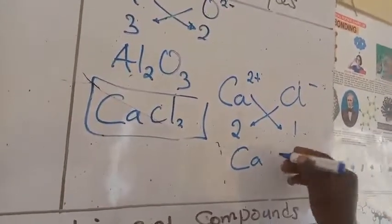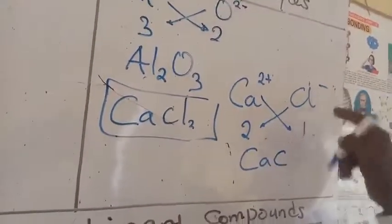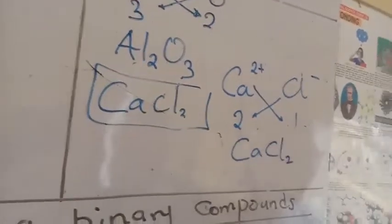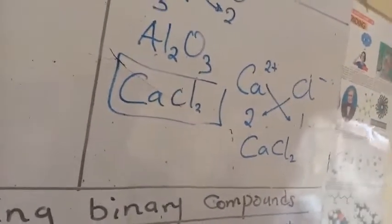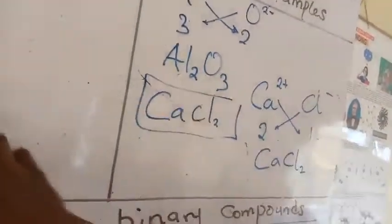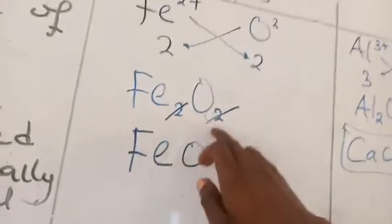This is 2 and this is 1. So you do an exchange of radicals. And then you have Ca, we don't write 1 in chemistry. That's why you didn't see any 1. I omitted 1 here. They have Cl2. So this is calcium chloride.